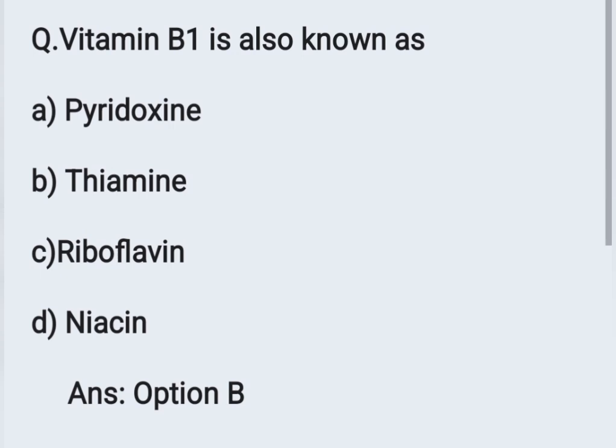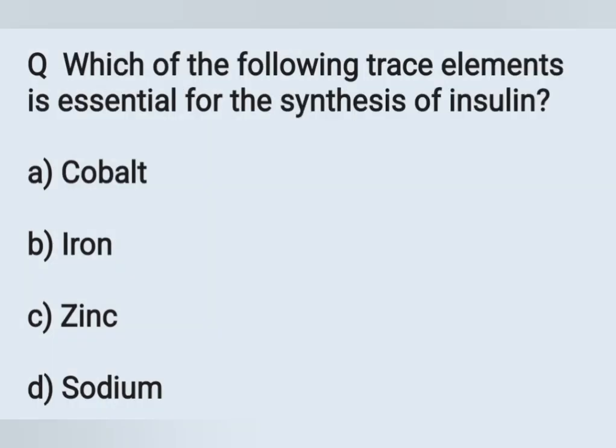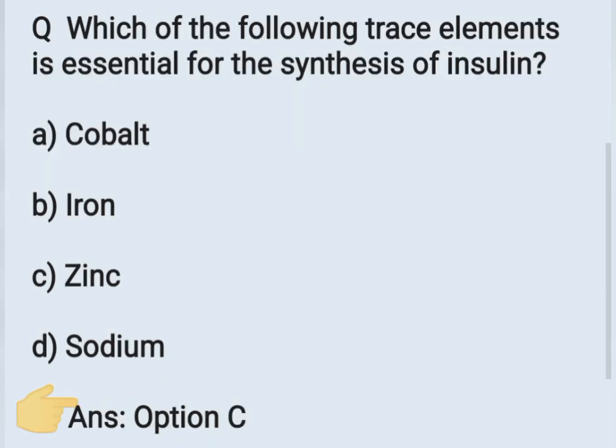The next question: Which of the following trace elements is essential for the synthesis of insulin? Option A: cobalt, Option B: iron, Option C: zinc, Option D: sodium. The trace element essential for the synthesis of insulin is zinc. Option C is the correct answer.